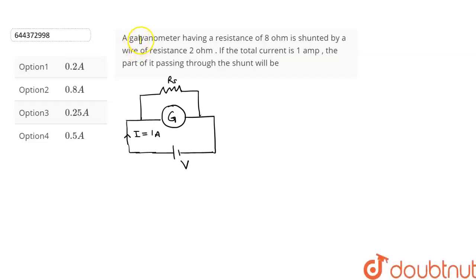The question is: a galvanometer having a resistance of 8 ohm is shunted by a wire of resistance 2 ohm. If the total current is 1 ampere, then we have to find the current passing through the shunt and we are given 4 options from which we have to choose the correct option.